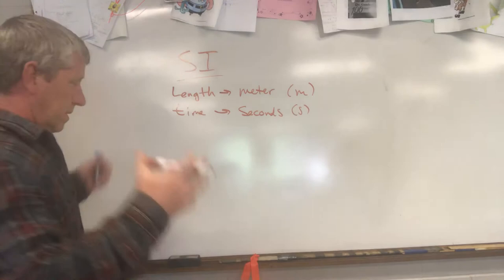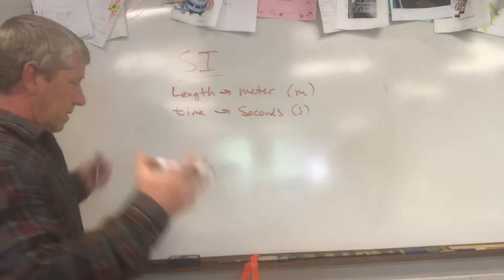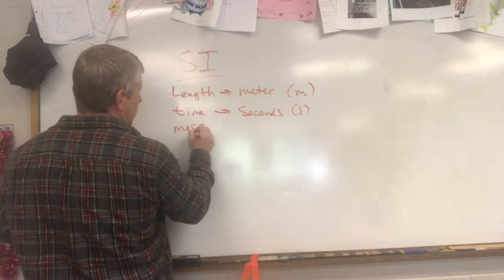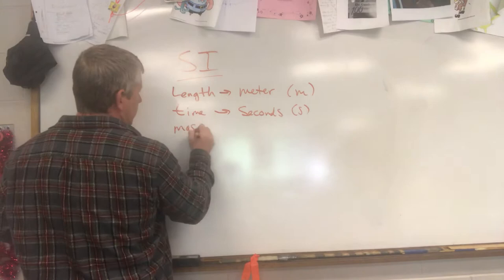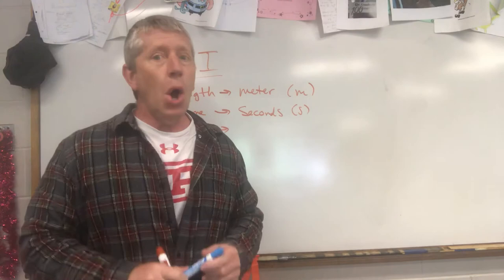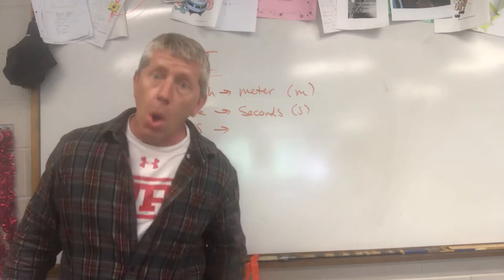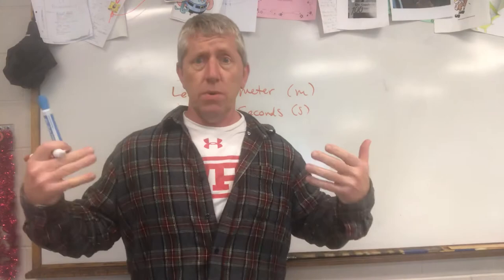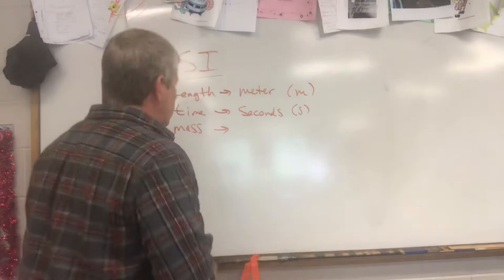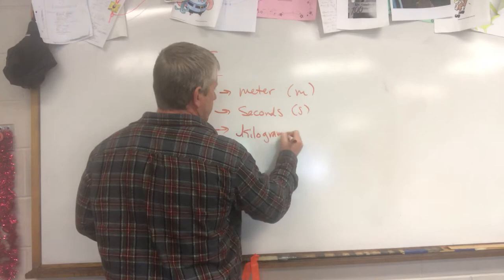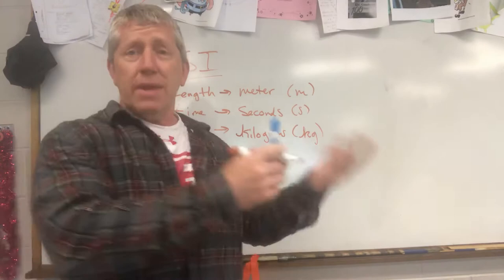Not only do we have to measure length and time, we also have to measure mass — how heavy something is. Mass: the basic unit is... kilograms. Not grams — that's for IRL. We need kilograms. Abbreviated with a cursive little k and a G: kg. I always use a cursive k because a non-cursive k looks like a big K and it gets confusing.